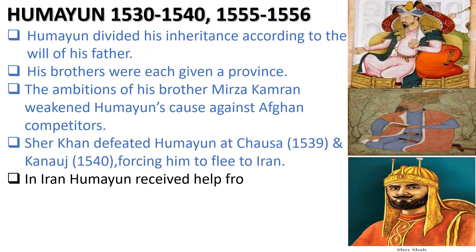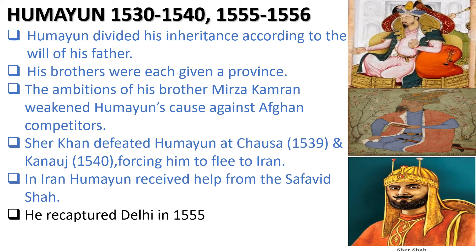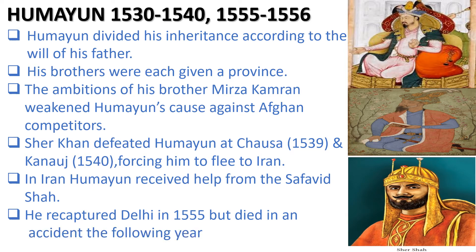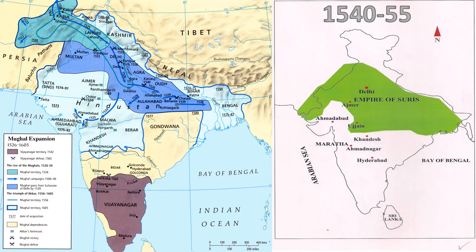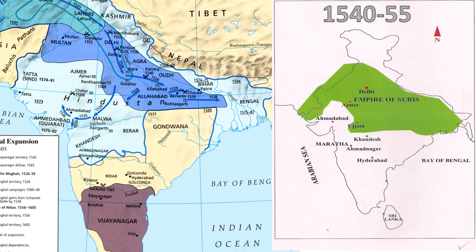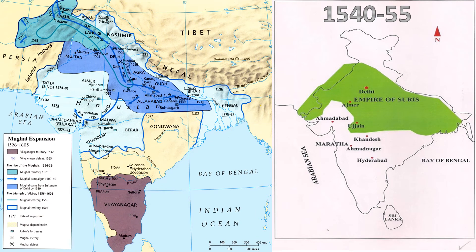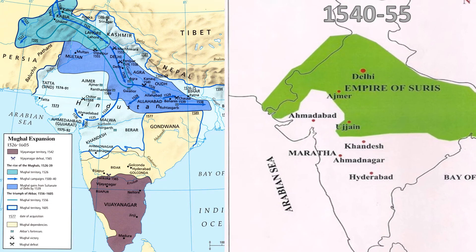Humayun received the help of the Safavid Shah. He recaptured Delhi in 1555 but died in an accident the following year, 1556. The Suri dynasty ruled in the interim — with three rulers: Sher Shah, Adil Shah, and Ismail Shah. The last, Ismail Shah, was defeated by Humayun in 1555, and Humayun once again recaptured his empire. The Suri dynasty covered a small area ruled by Afghan rulers, which was not a very vast empire.